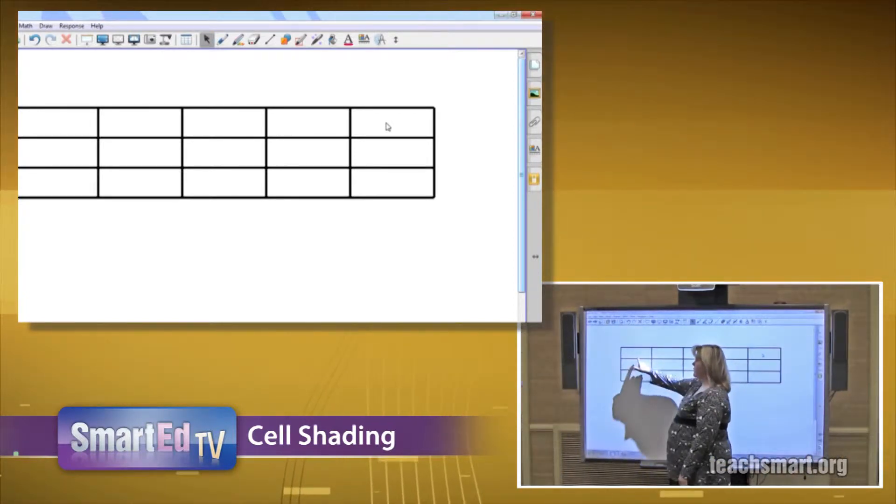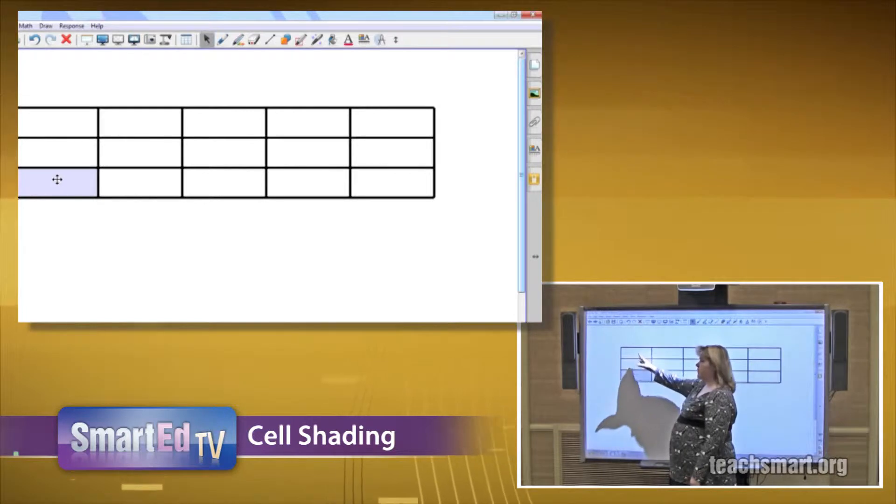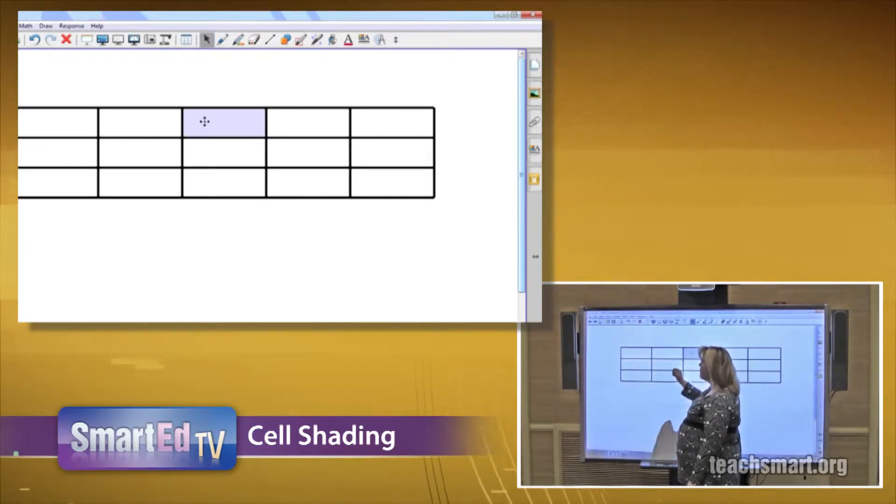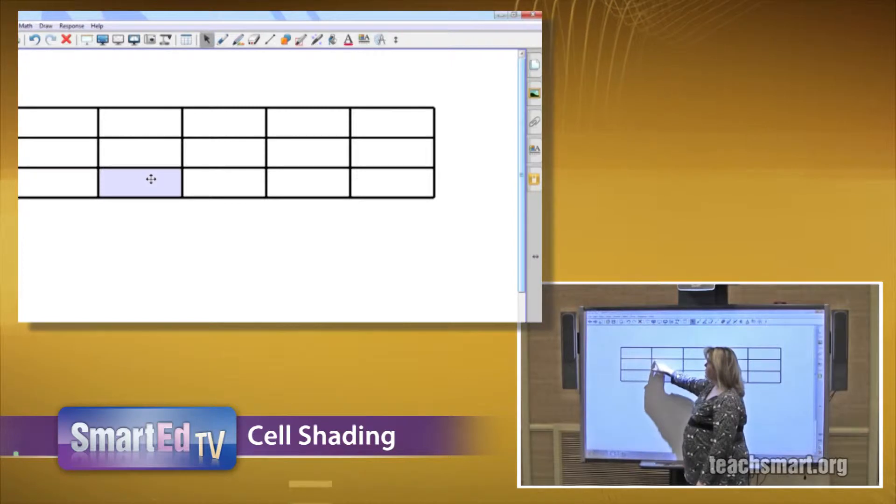As a matter of fact, let's even pretend that I might have information in my far left column and in my far top rows. So what I'm going to do is I'm going to select the cells I want to be shaded.